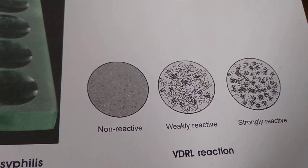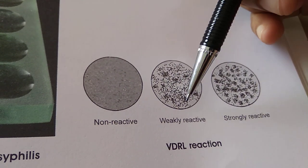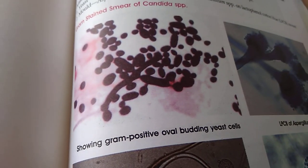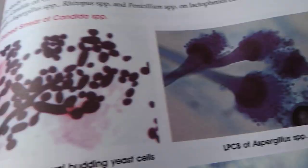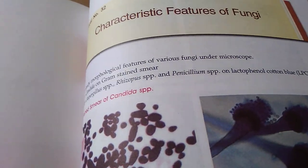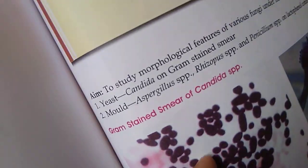How a VDRL reaction looks — non-reactive, weakly reactive, strongly reactive. There is so much to learn. I think this book is kind of nice for revision also. This is mycology — fungi. Rhizopus — I want to look at rhizopus. Where is rhizopus? This is rhizopus — like that flower.